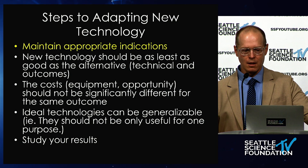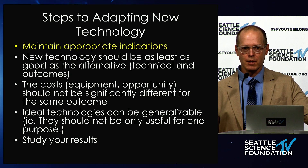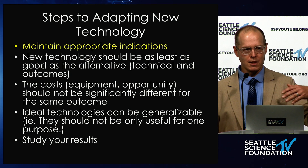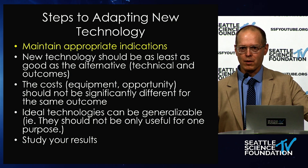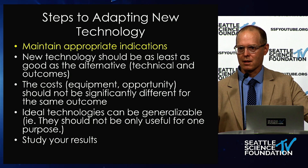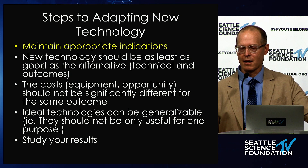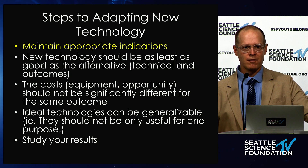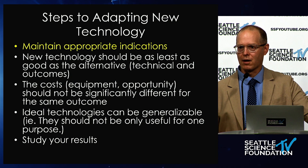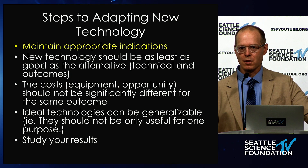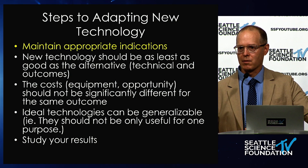The cost for equipment and opportunity cost should not be too significantly different from doing your traditional operation. When you see that was my very first case, it was amazingly quick. I didn't lose much as far as timing. The ideal technology also needs to be generalizable. One of the biggest pushbacks from my colleagues was: how many foraminal discs are there? You're not going to use that technology that often. That's why the interlaminar approach became important for me — I would be using that technology more commonly. And of course, study your results.